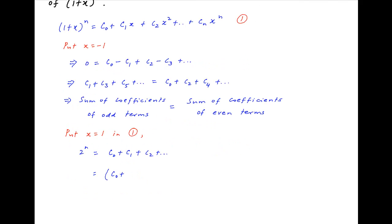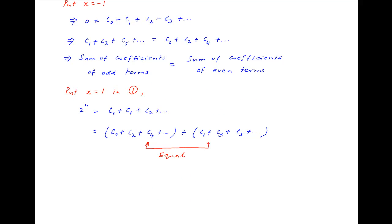The right hand side can be broken into two components: the first is the sum of the coefficients of the even terms, and the second is the sum of the coefficients of the odd terms. But we have established above that these two sums are equal, and therefore the right hand side can be written as 2·(C0 + C2 + C4 + ...).